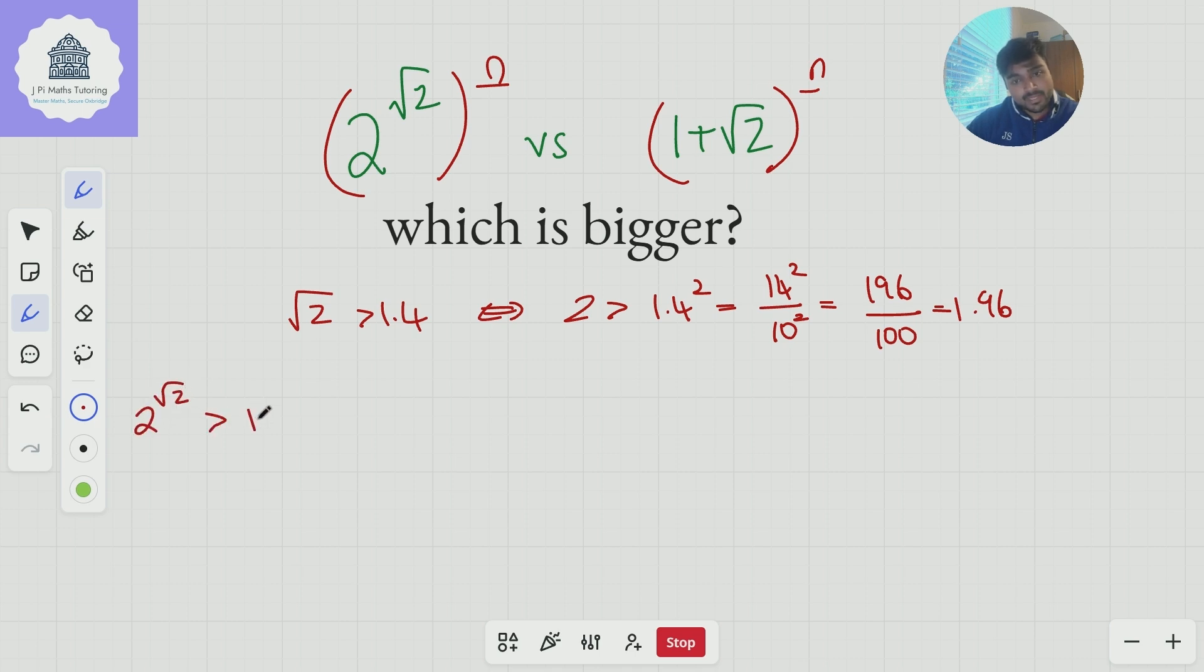So 2 to the root 2 is going to be bigger than 1 plus root 2, that's true if and only if 2 to the 5 root 2 is bigger than 1 plus root 2 to the 5, like so. And now the idea is, well, is this inequality true? Well, 1 plus root 2 to the 5, you can just use a binomial expansion to expand. I'm going to save you the hassle. It's 41 plus 29 root 2.